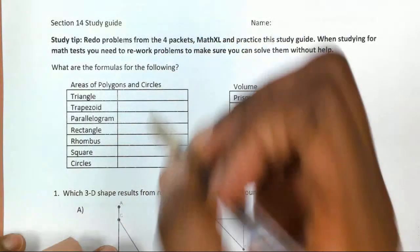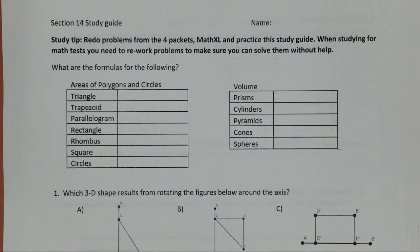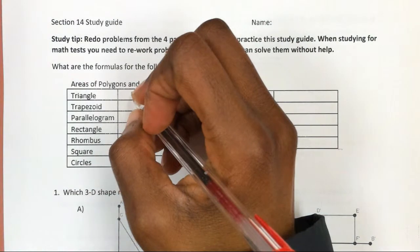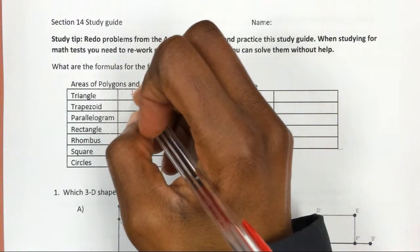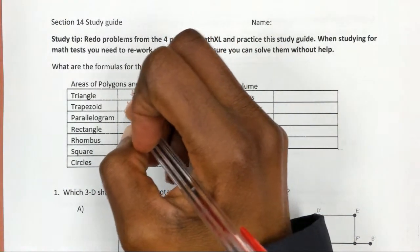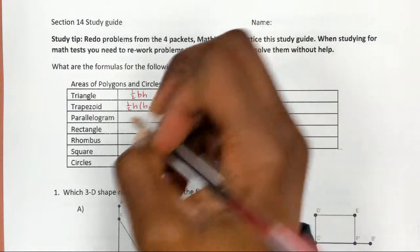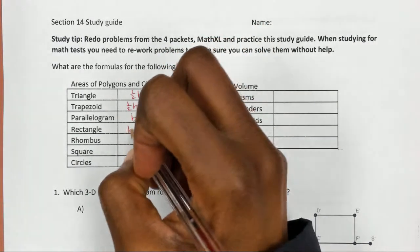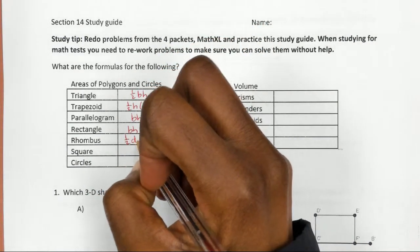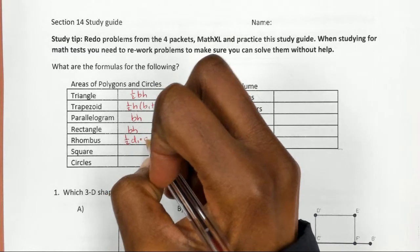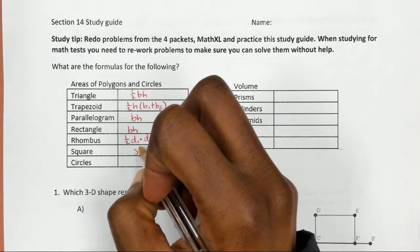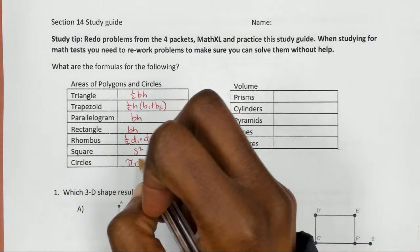In the formulas section, you can go ahead and write these in — I'll write them in while doing this but fast, so pause if you need to. The area formulas are: one-half base times height; one-half height times (base 1 plus base 2); base times height; base times height; one-half diagonal 1 times diagonal 2; s squared (side squared); and pi r squared.